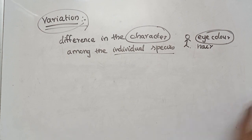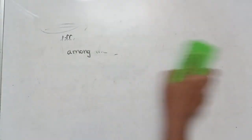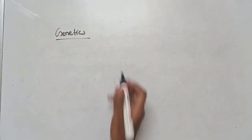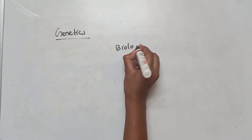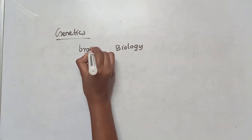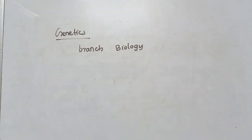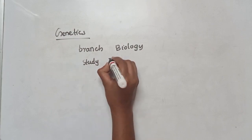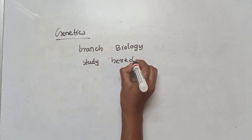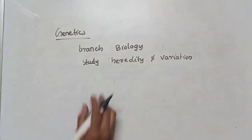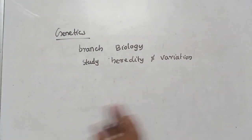What is genetics? Genetics is a branch of biology. Biology is a science. Genetics is one branch of biology which deals with the study of heredity and variation.